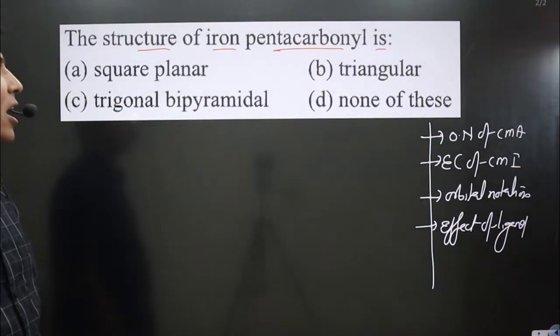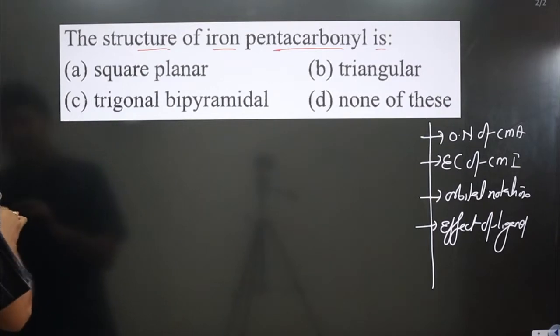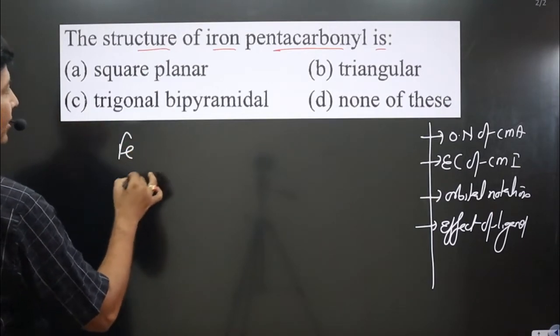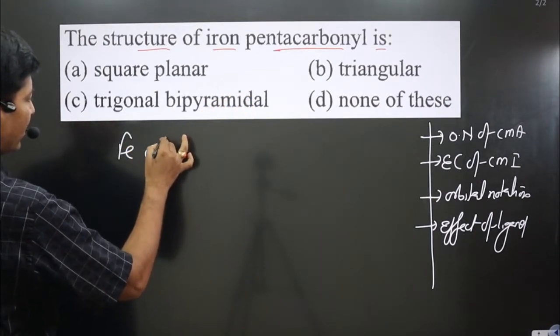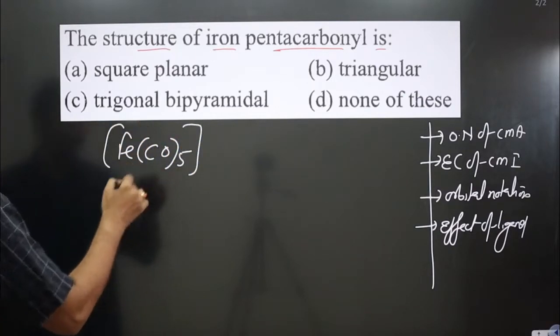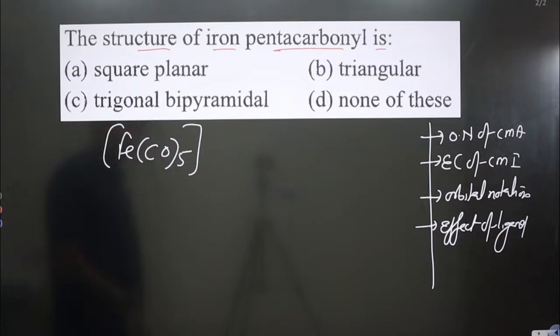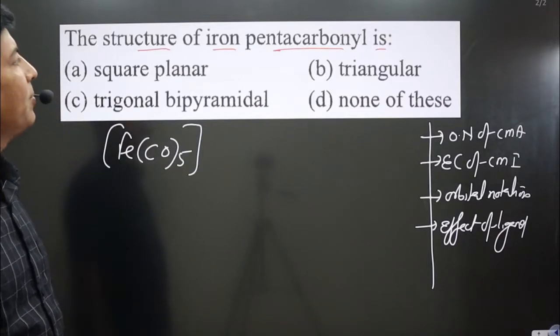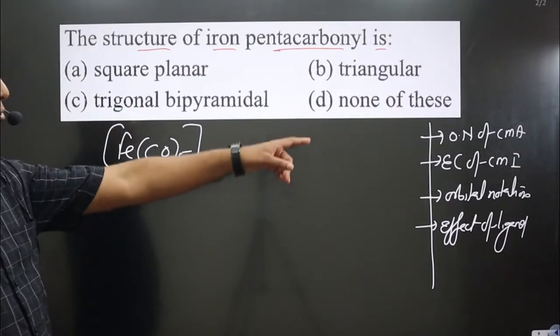We need to write the chemical formula. Iron pentacarbonyl has iron and the carbonyl group, with penta meaning five. You can see this is a neutral complex, so the overall charge is supposed to be zero in this case.